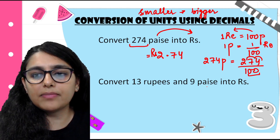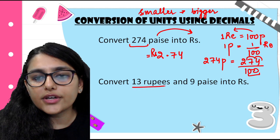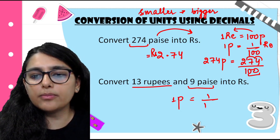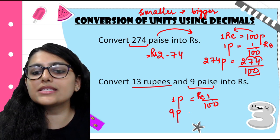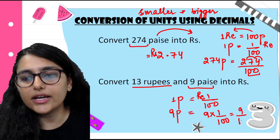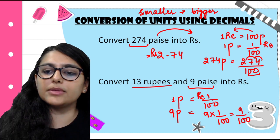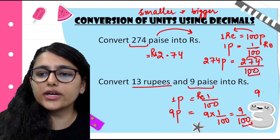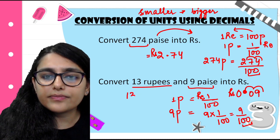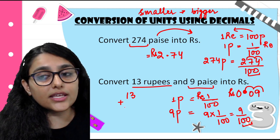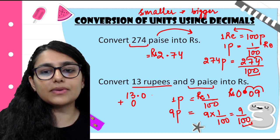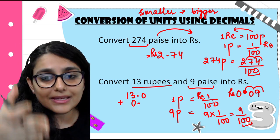Next: convert 13 rupees and 9 paise into rupees. 13 is already in rupees, so I convert 9 paise to rupees. We know that 1 paise equals 1 upon 100 rupees. So 9 paise equals 9 into 1 by 100 = 9 by 100. Converting 9 by 100 to decimal: count the 2 zeros and skip 2 places, giving 0.09 rupees. Now I add it to 13: 13.0 plus 0.09 equals rupees 13.09. Addition and subtraction of decimals: the decimal points must be aligned one below the other.